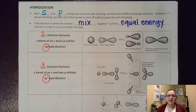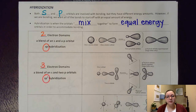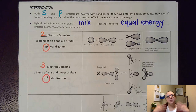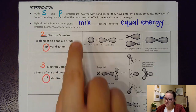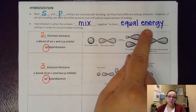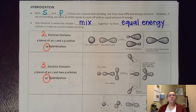Hey guys, Ms. Morusik here, and in this video we're going to talk about hybridization. Now most of us know that S and P orbitals are involved in bonding, but the problem is that P orbitals have slightly higher energy than S orbitals do. However, when things bond, we want to be bonding in equal energy orbitals. So hybridization is the idea that orbitals mix together to form equal energy orbitals in order to accommodate for bonds that all have an equal energy to them.